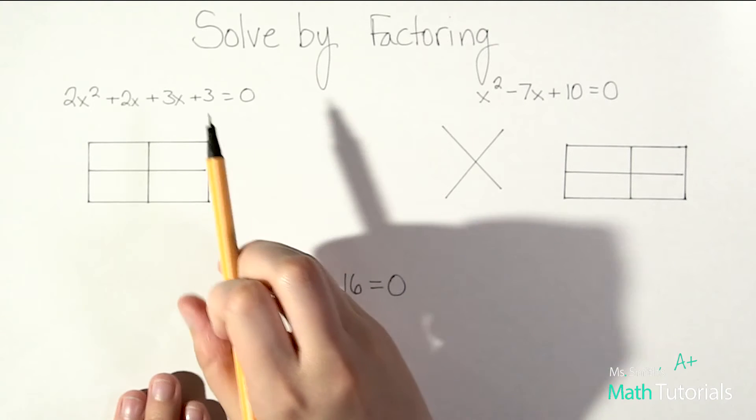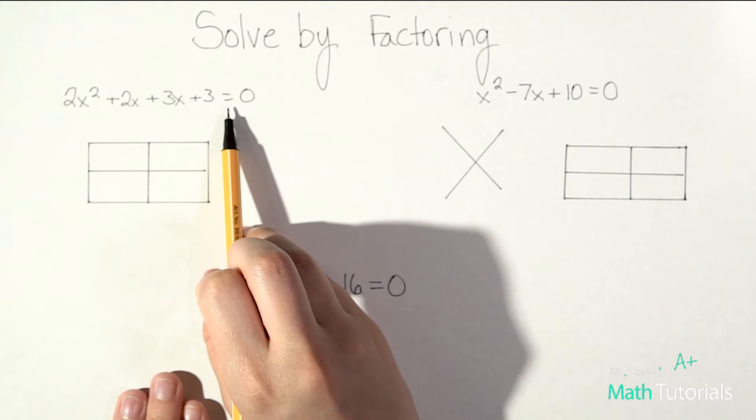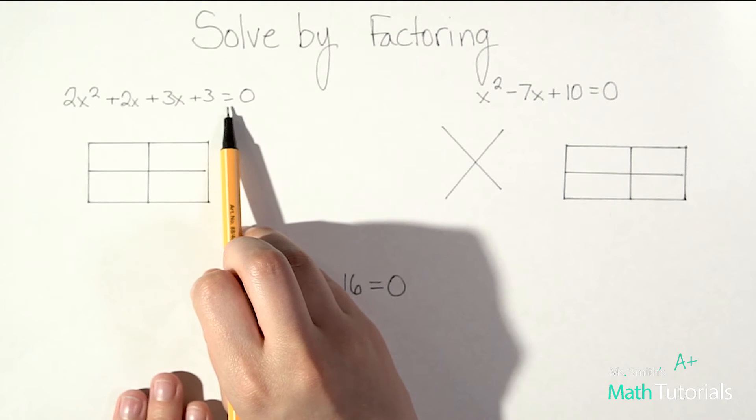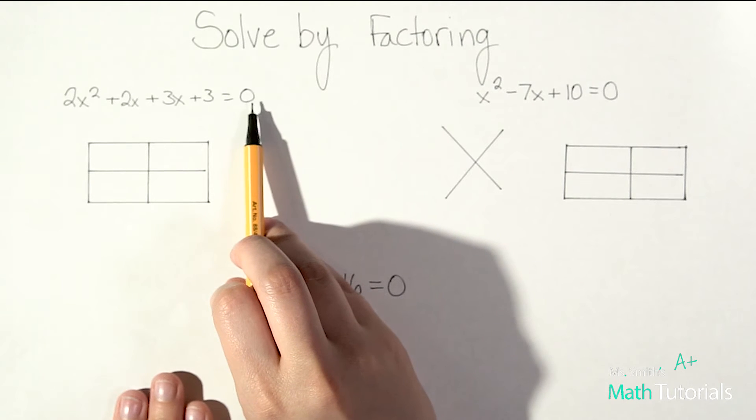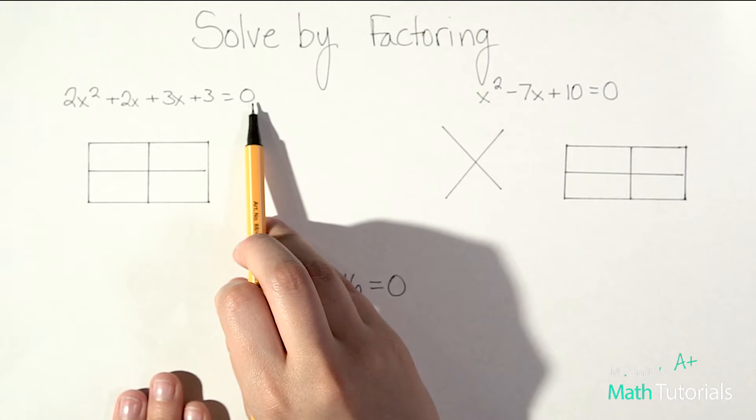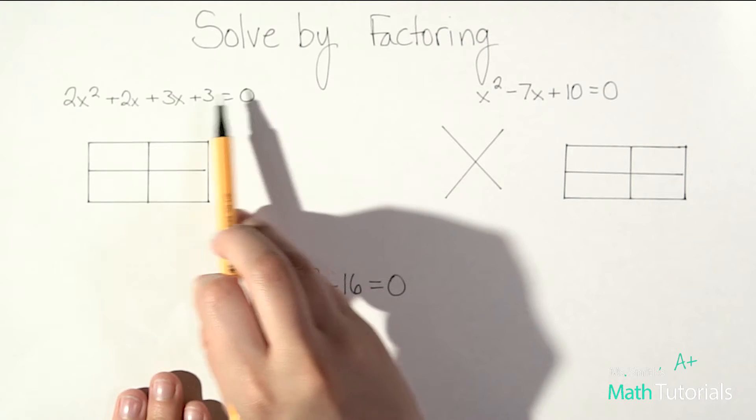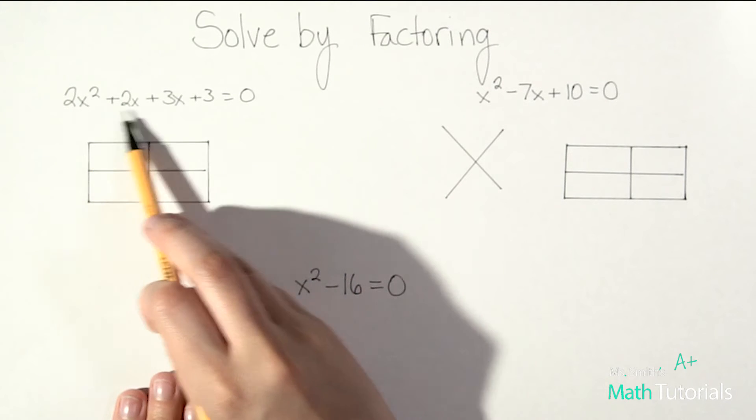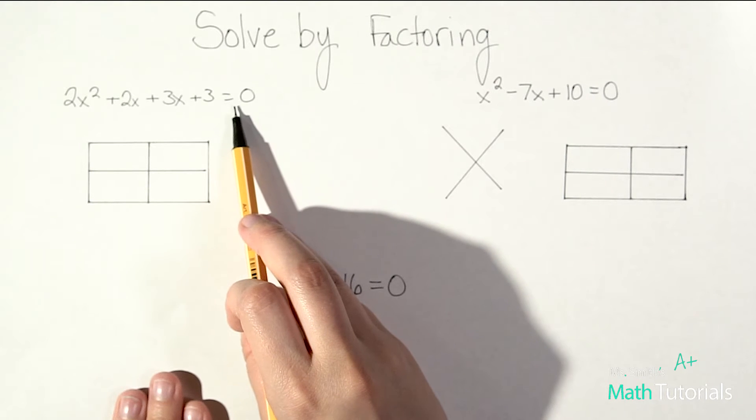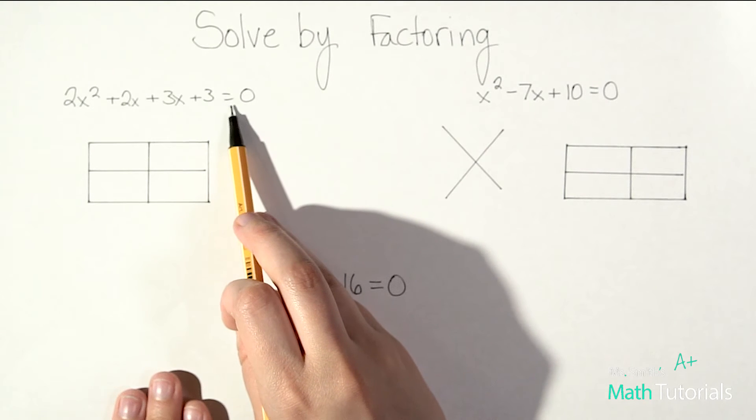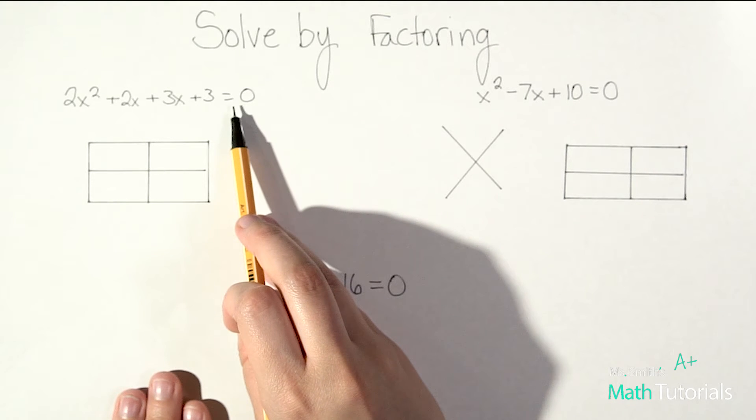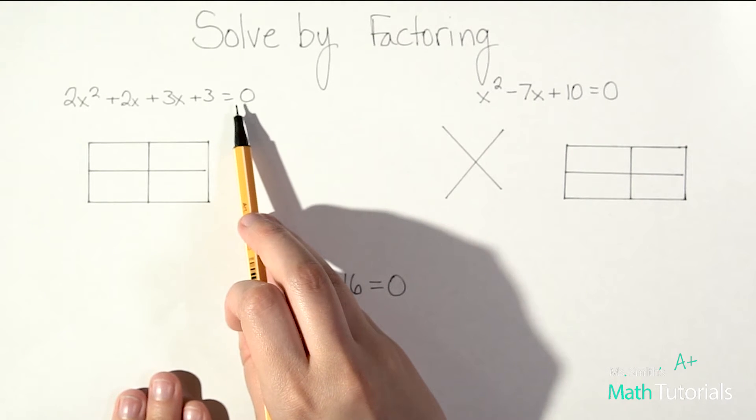You'll notice that something these polynomials have that the others in the other videos did not is that there's an equal sign here. That means this is an equation. In regular factoring when we're not solving, it's usually just an expression. There's no equal sign which means we can only take the problem so far. But once we put an equal sign there that's our indicator that this is an equation and we're gonna get an exact answer.